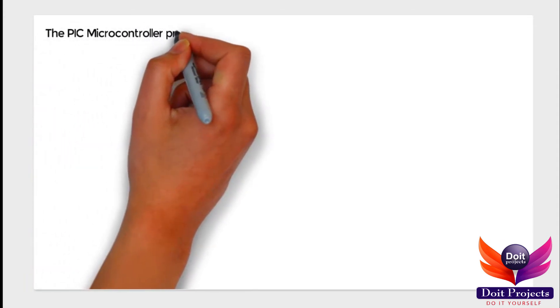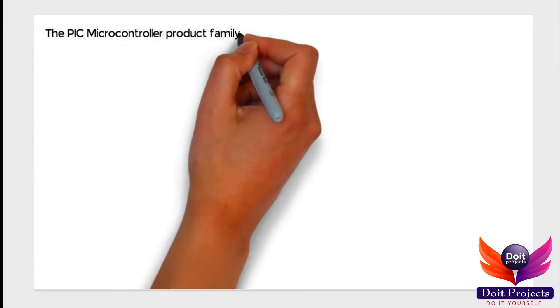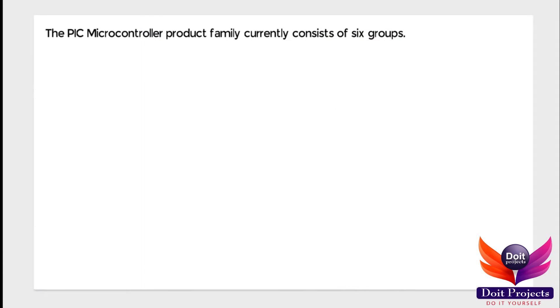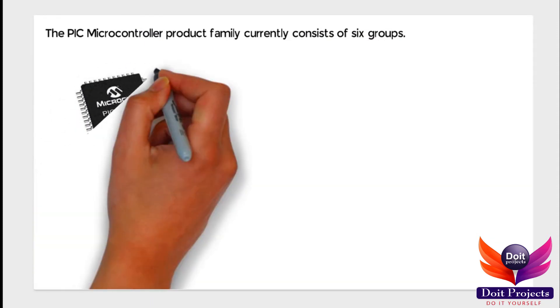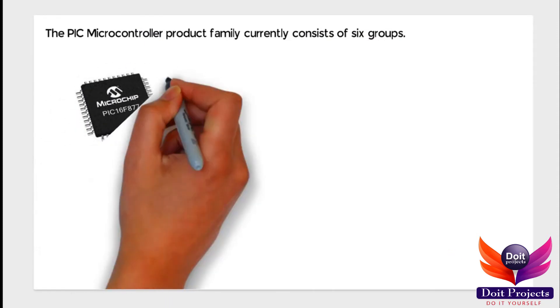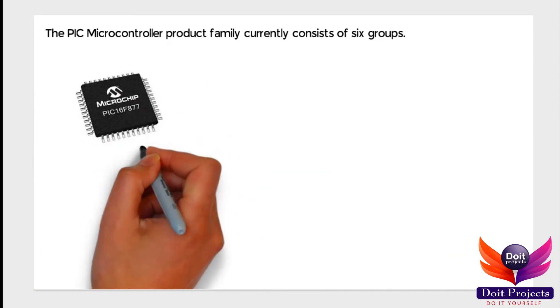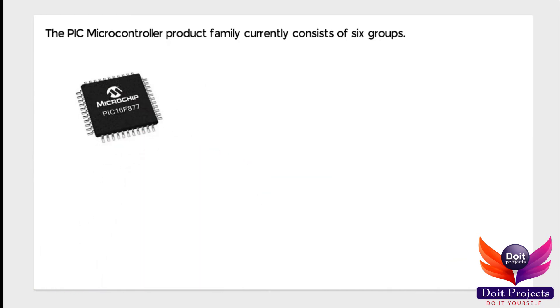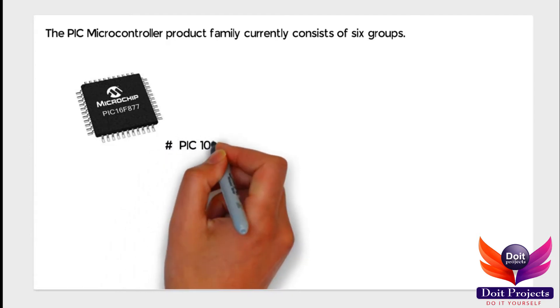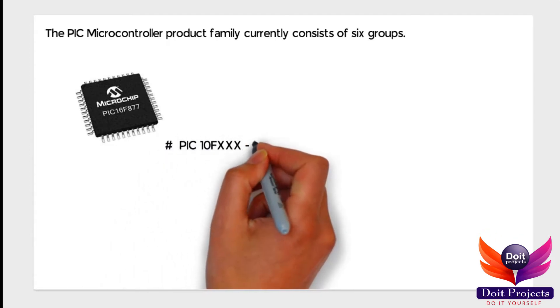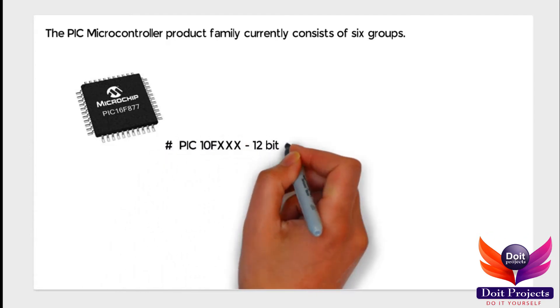First we will see the family members of the PIC microcontroller. The PIC microcontroller product family currently consists of six groups. Now I will tell you the names of the six groups. The first one is PIC 10Fxxx.